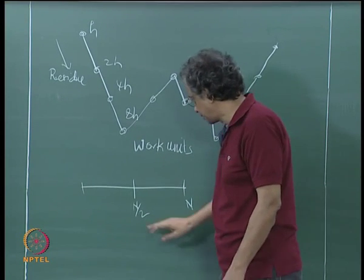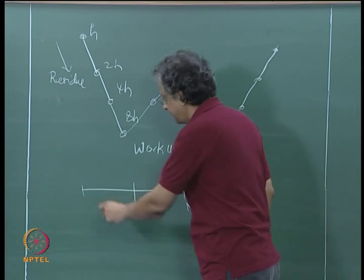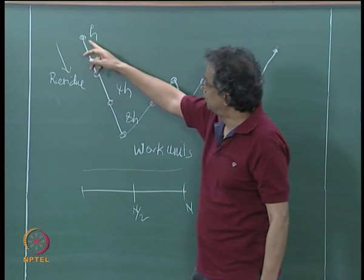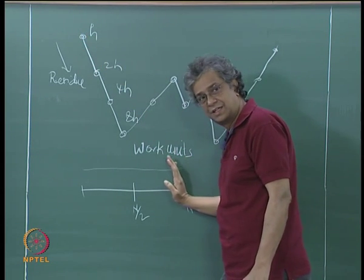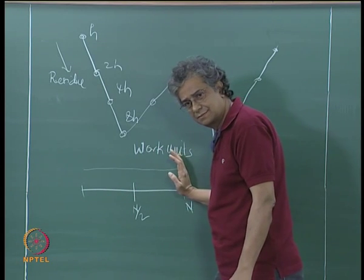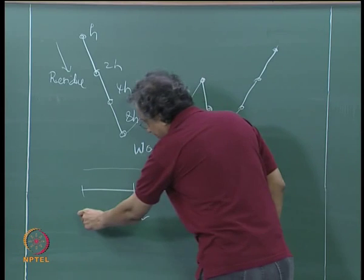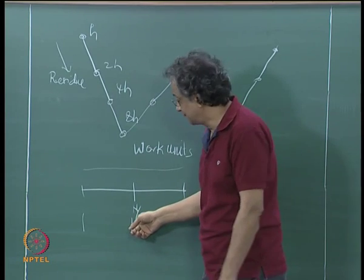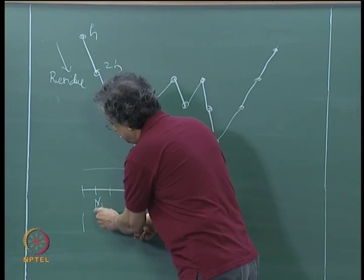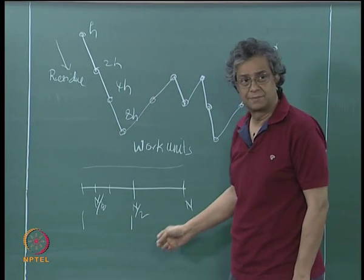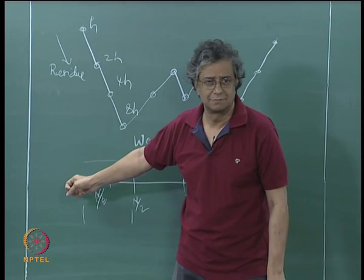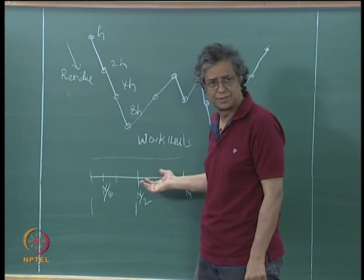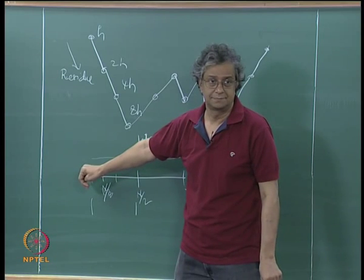If you have a residue that is uniformly distributed initially, you want to do enough iterations to eliminate the wave numbers in the higher half. Then you can transfer to a coarser grid where the maximum is n/2. If you wanted to go down to n/8, you would have to do a lot more work on the fine grid, or do more residual smoothing in order to push it down.